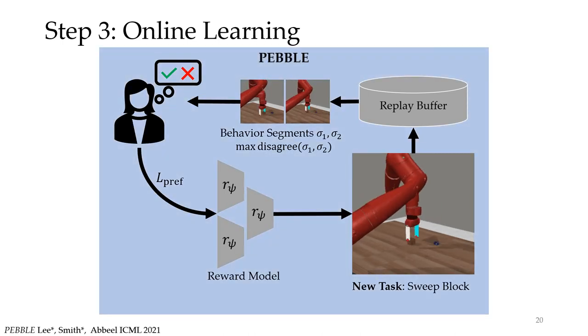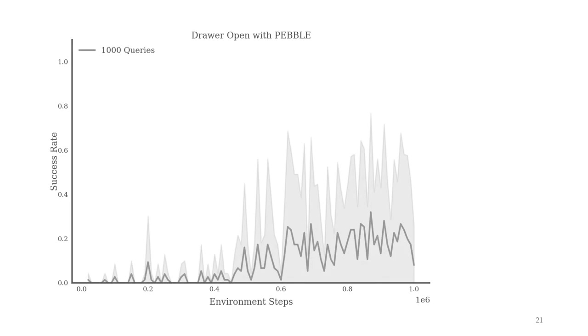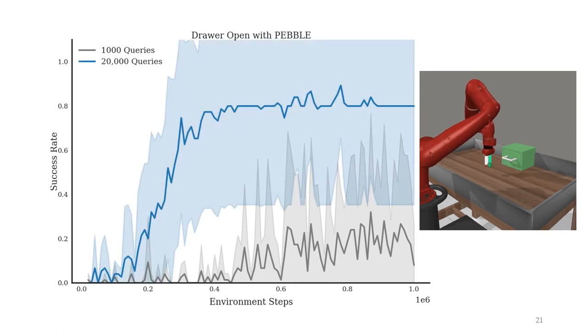However, without using our pre-trained model, we run into the aforementioned problem. We need tons and tons of queries. Here's an example. If we only use a thousand queries, Pebble is unable to teach the robot how to open the drawer. Once we use 20,000 queries, Pebble makes progress on the task, but it doesn't perfectly converge and is subject to huge variations in runs due to the additional randomness of active learning.